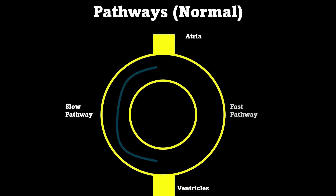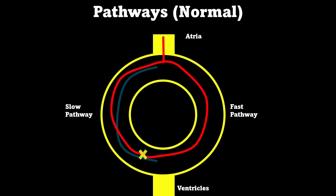In our normal pathway in our AV node, we have a fast and a slow pathway. Our fast pathway depolarizes fast, and our slow pathway depolarizes slowly. However, the slow pathway has a shorter refractory period and is able to accept an impulse faster than our fast pathway. An impulse enters our AV node and quickly goes down our fast pathway and slowly down our slow pathway. These impulses collide and cancel each other out in the slow pathway, and the impulse heads down to our ventricles via our fast pathway.